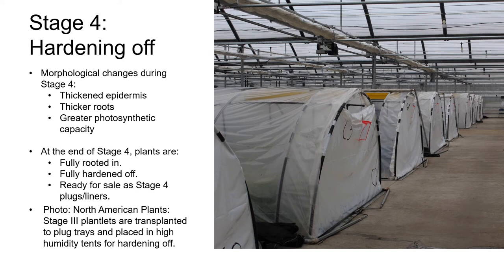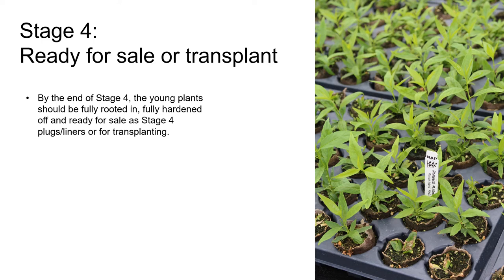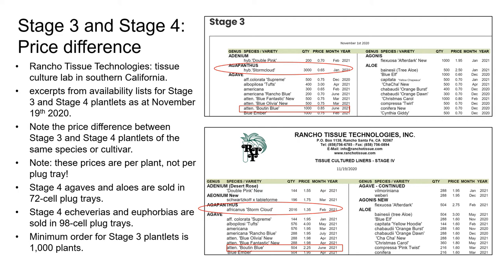Morphological changes take place during stage four as the plantlets are hardening off and acclimatizing to life outside the very controlled environment of the culture room. The plantlets develop a thickened epidermis, which helps to reduce water loss. They also develop thicker roots and photosynthetic capacity. By the end of stage four, the young plant should be fully rooted into the plug trays, fully hardened off, and ready for sale as stage four plugs or liners. If the tissue culture lab is an in-house lab, the plantlets will be transplanted to larger containers.